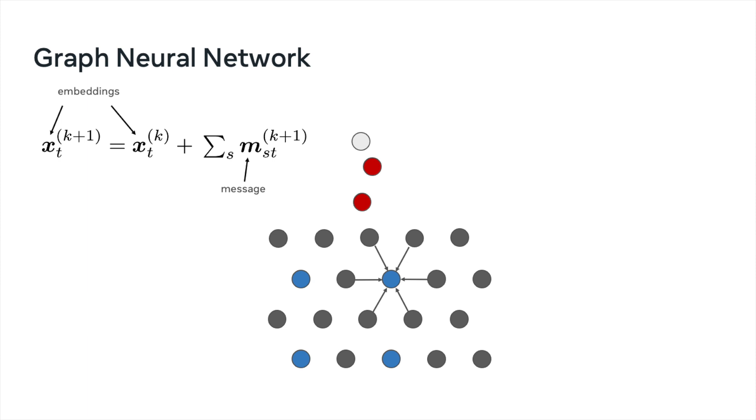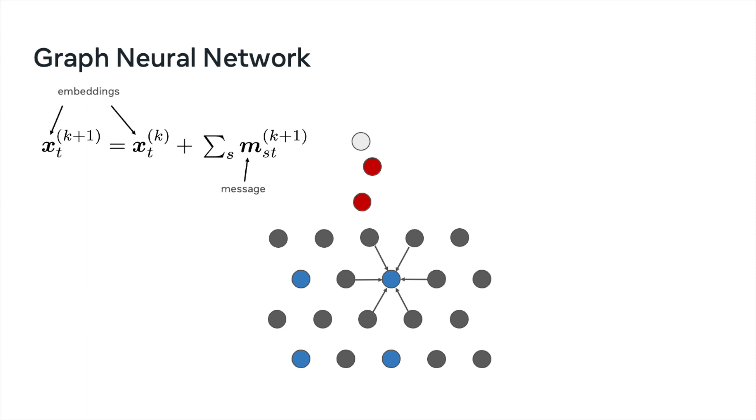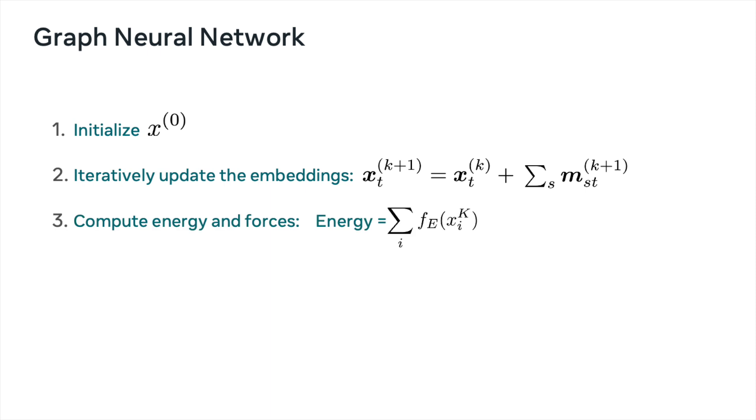So the way we compute the energy and forces for a graph neural network is as follows. First, we initialize the network, typically by using the atomic numbers to look up an embedding. We then iteratively update the embeddings using the messages I just talked about. And then finally, we take the resulting embeddings, and we pass that into another neural network to compute the energy of the overall system.